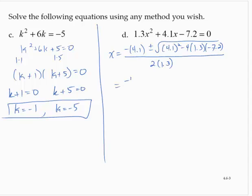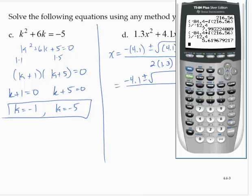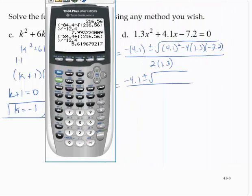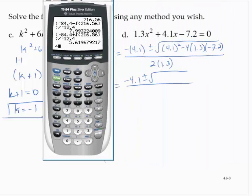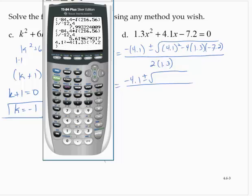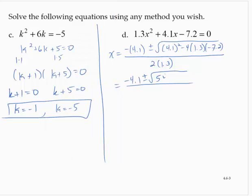So I'd have -4.1 ± √(...). And I'm going to use the calculator here because I don't want to mess with those numbers in my head. So I'd have 4.1² - 4(1.3)(-7.2). So that's 54.25 under the radical. 2 times 1.3 is 2.6 in the denominator.